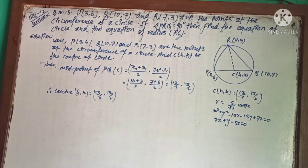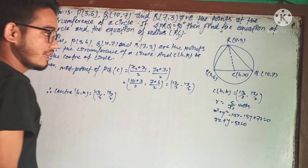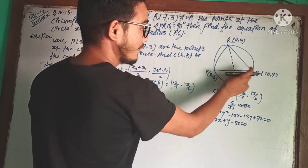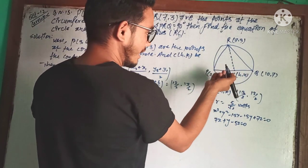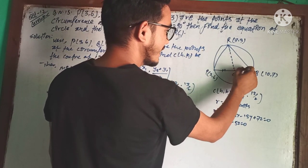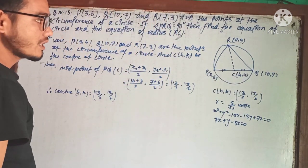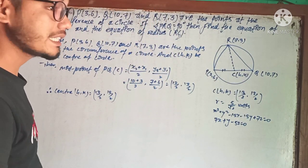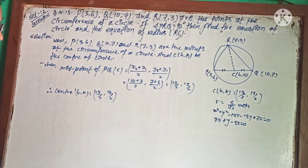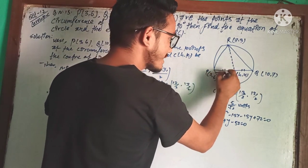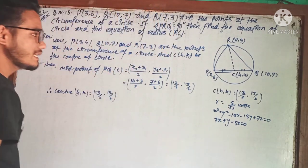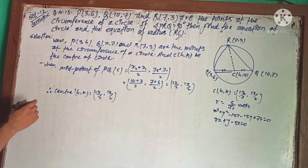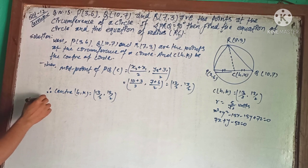Now we need to find the radius of the circle. Since C is the center and P and Q are on the circle, both PC and QC equal the radius.